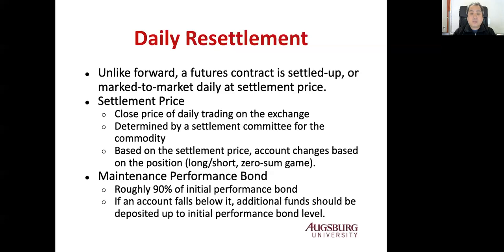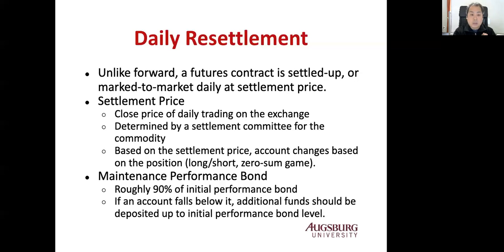To provide a safety net, there is a maintenance performance bond, roughly 90% of the initial performance bond. If the account falls below this level, then additional funds must be deposited up to the initial performance bond level — not just up to the maintenance level. This is typical of any futures contract, not just foreign exchange futures.